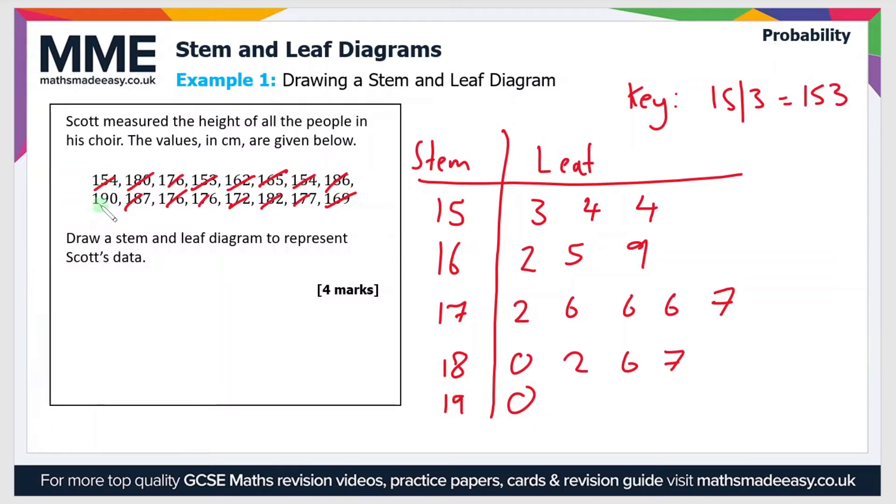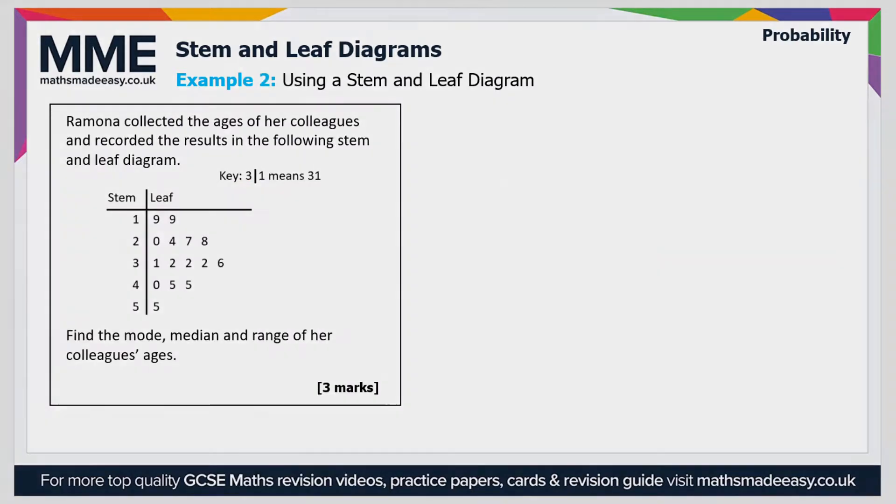So that's how to draw a complete stem and leaf diagram. You could use any value for the key. I just like to do it first with the first value and then it's done and it's out of the way. But let's move on to a second example now. So the second example: Ramona collected the ages of her colleagues and recorded the results in the following stem and leaf diagram.